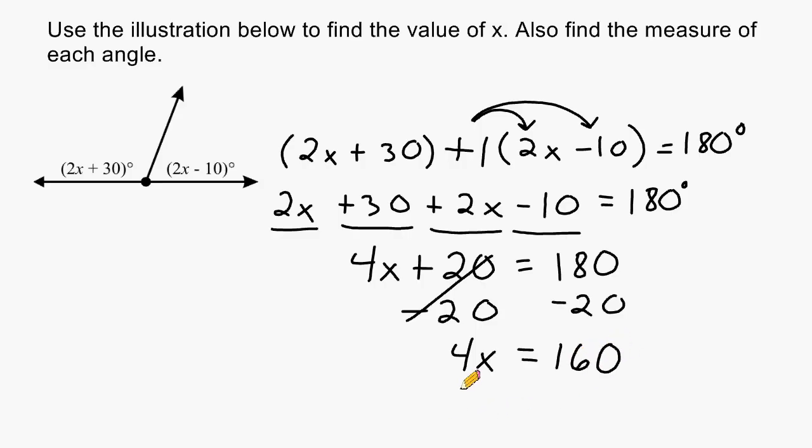Because our goal is to have 1x at the end of our equation, we are going to take the number 4 and divide it by itself. Because anything divided by itself is one whole. And we have to balance our equation so we have to also divide the other side by 4. So on the left, 4 divided by 4 is 1 and that leaves us with 1x. And on the right hand side, we have 160 divided by 4 which is 40.